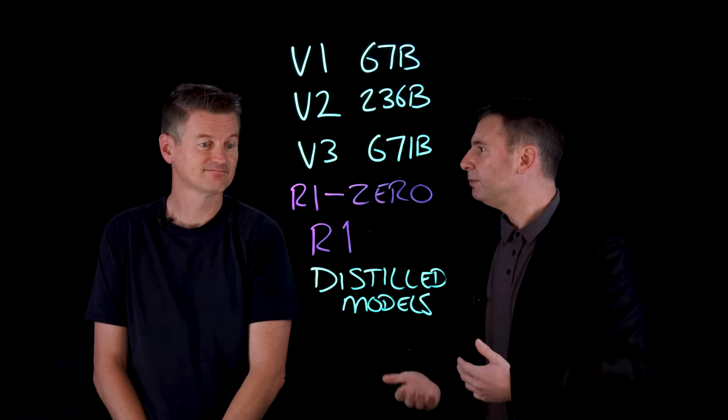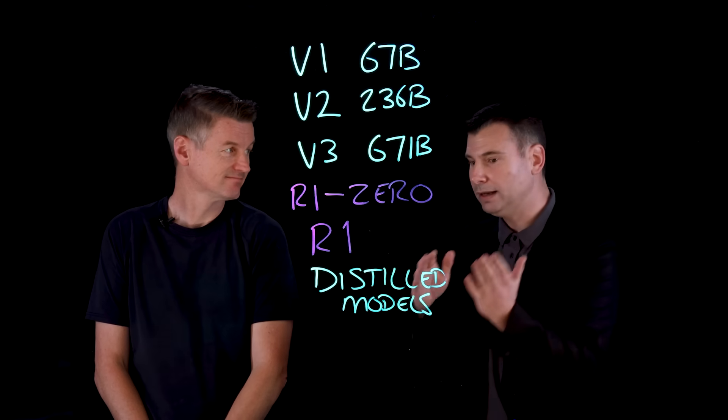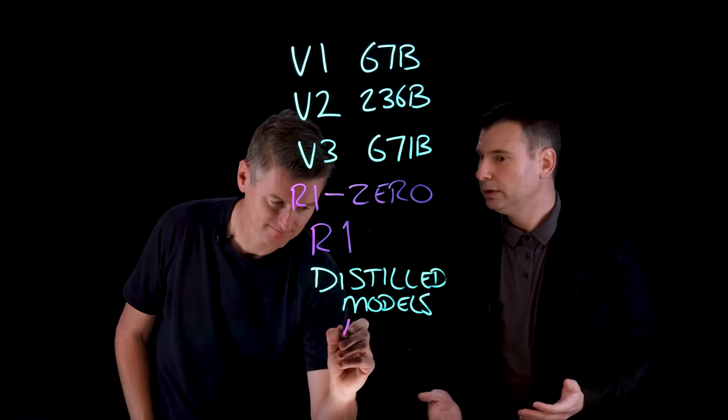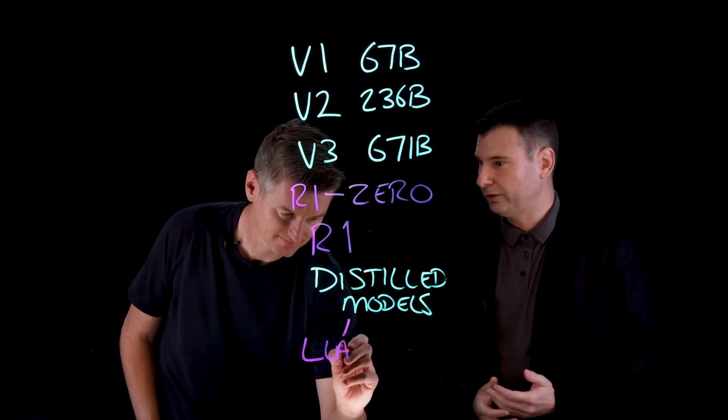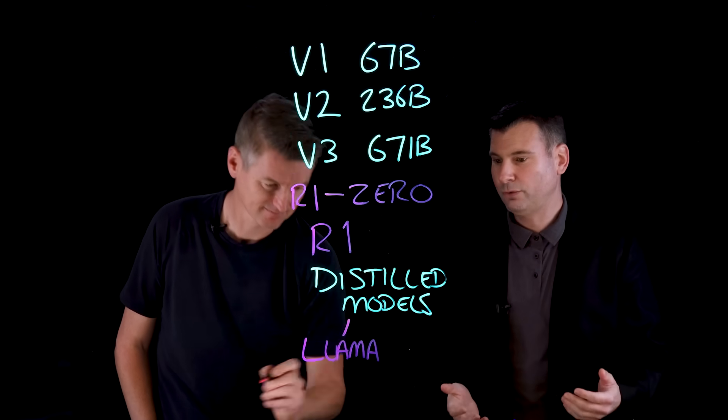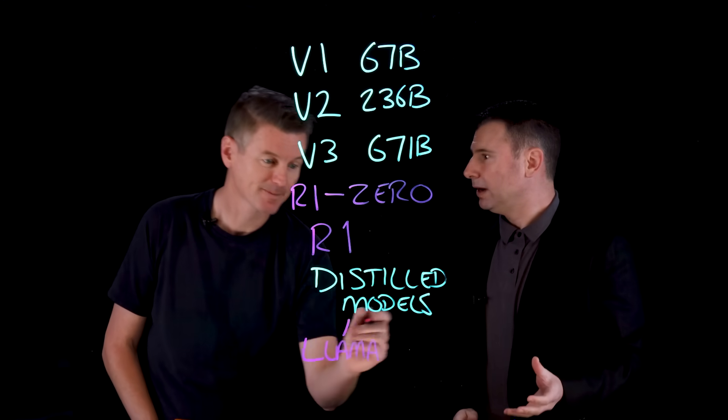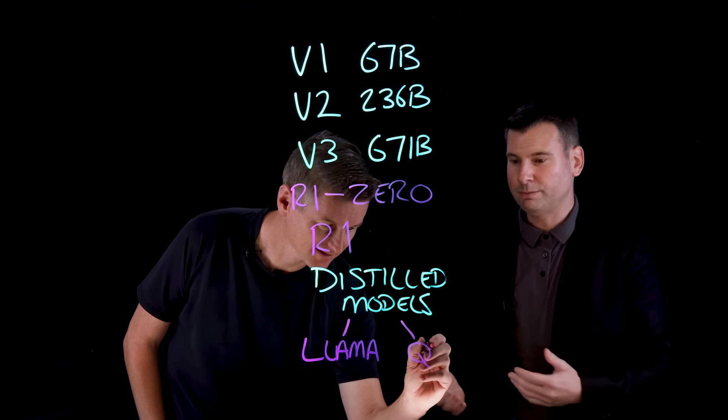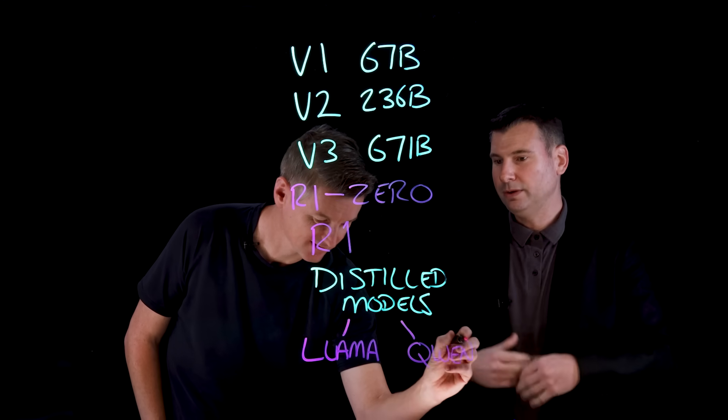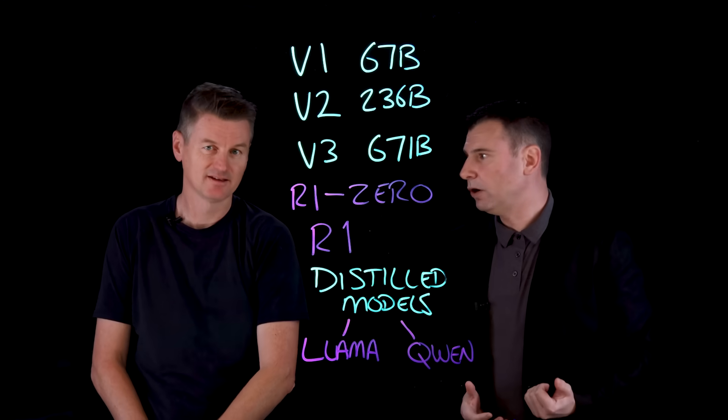Down into, for example, a Llama series model, which is not a mixture of experts, but it's a traditional transformer, right? So you're going from one architecture type to another. And we do the same with Qwen, right? So there's different series of models that are the foundation that we then distill into from the R1-0.